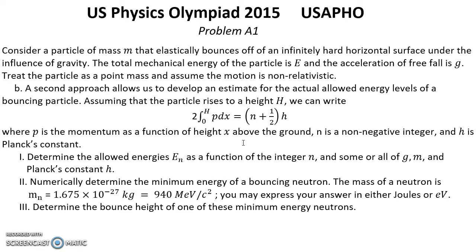Numerically determine the minimum energy of a bouncing neutron. The mass of a neutron is this one in kilograms or mega electron volts per C square. You may express your answer in either kilos or electron volts. 3. Determine the balance height of one of these minimum energy neutrons. Solution.